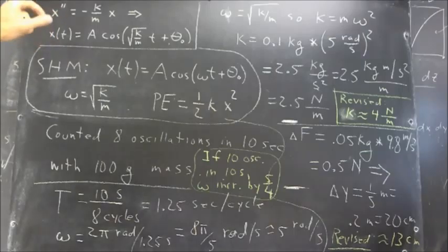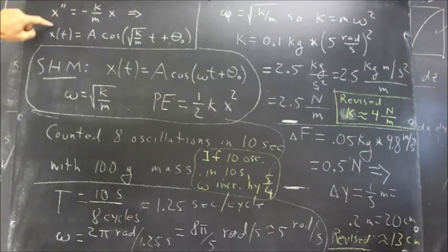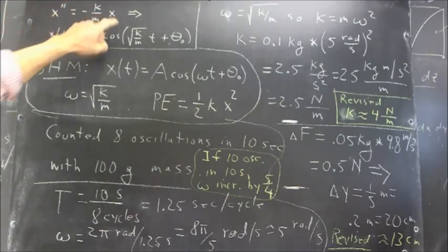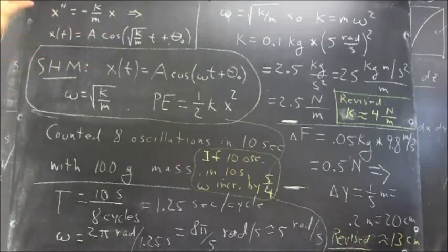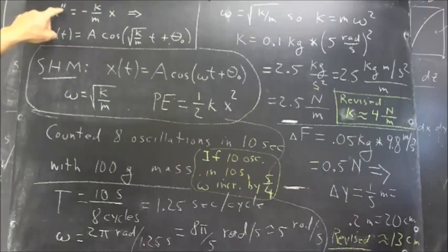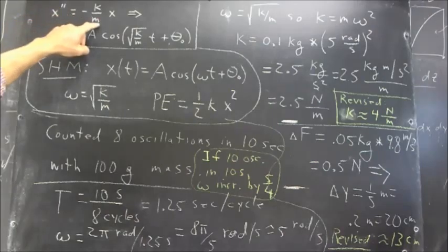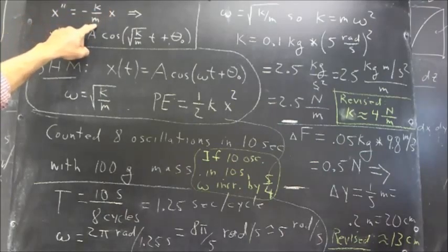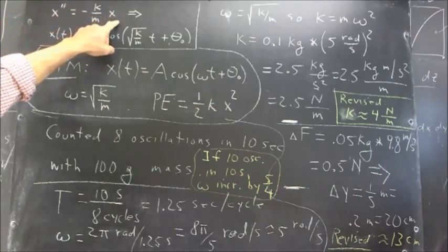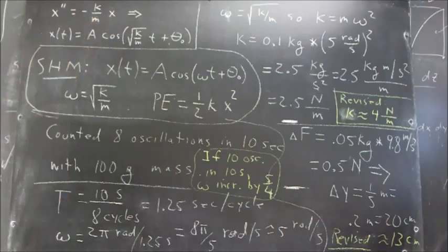And that leads, in any case, directly to the differential equation X double prime, which is the acceleration, is negative K over M times X. If net force is negative K X, then the acceleration, which is the second derivative of the position function, is that divided by the mass. So this differential equation simply represents the fact that the net force is negative K X.